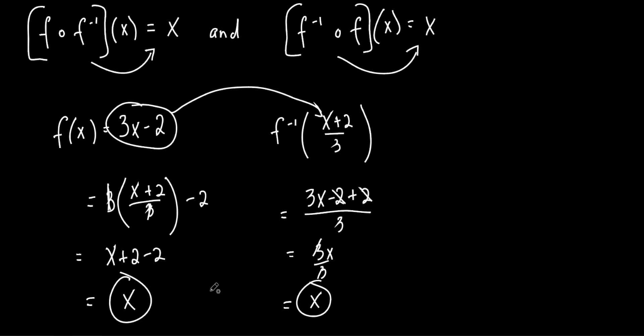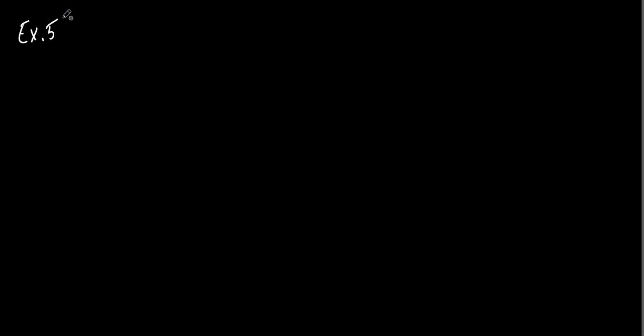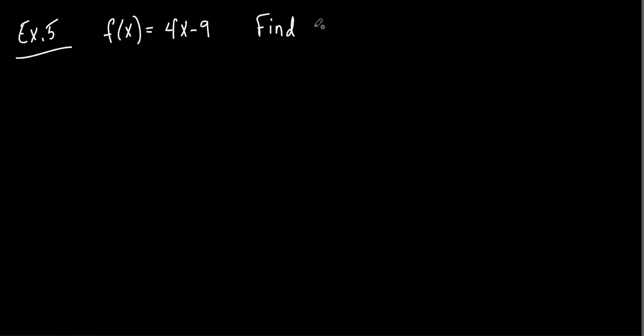It's almost identical to what we did in section 1-2, almost identical — except now we know more about functions and inverses. Now if they both come out to be x, then they are inverse functions of each other. Let's do one more example and we'll be done. This is example 5. They give you f of x and it says find the inverse of x, and then also verify that they're both inverse functions.